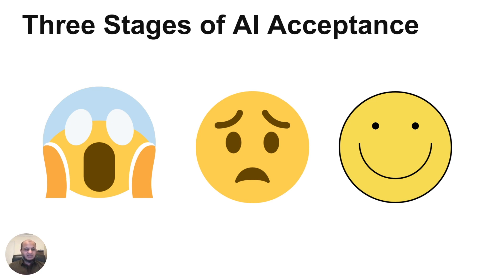The second group is worried — not scared, but worried about how much has changed since ChatGPT came out. Industries changed in a matter of months, but this group isn't taking any action. The third group on the right is eager and enthusiastic — they've decided to deep dive. They realize the world keeps changing and you need to be proactive, keep upskilling and learning.